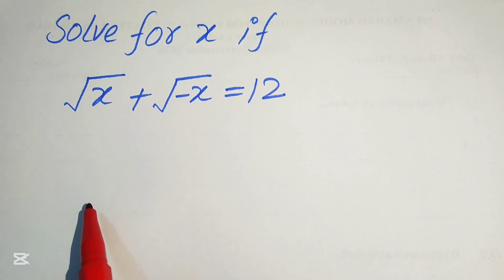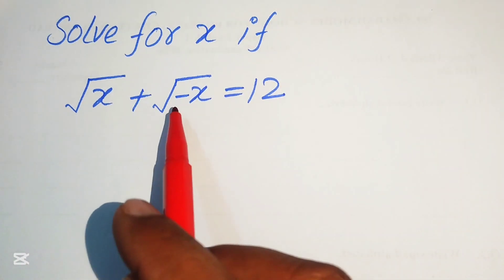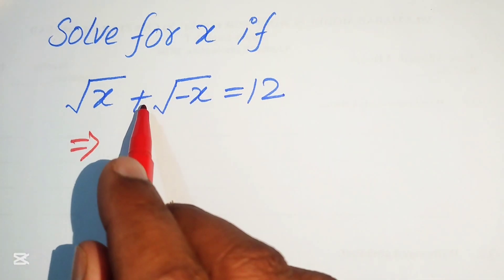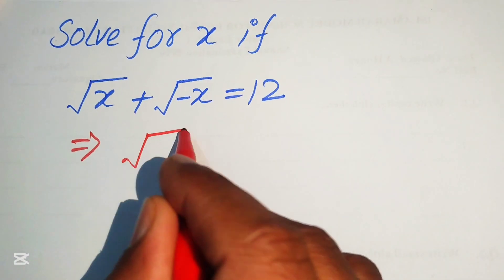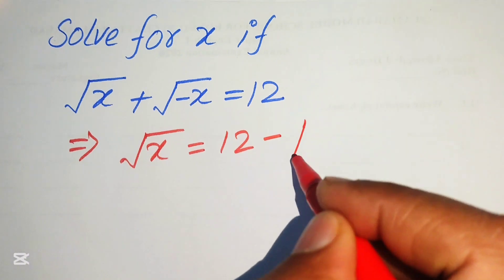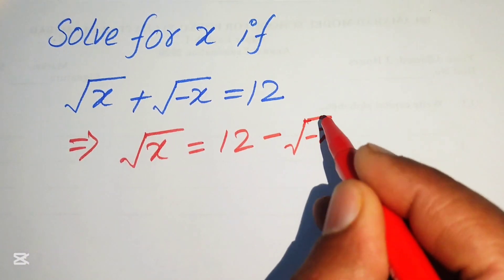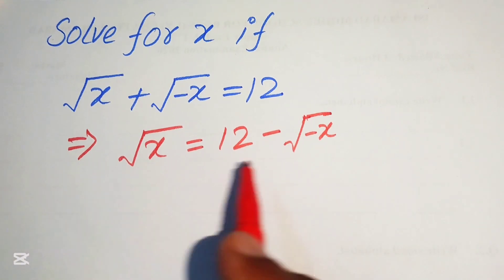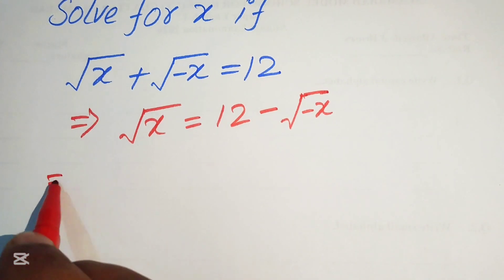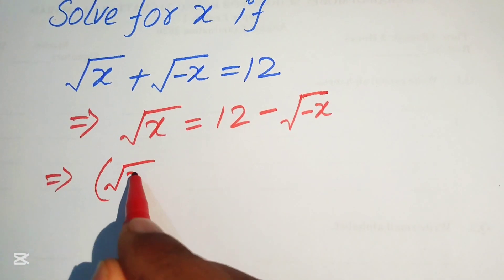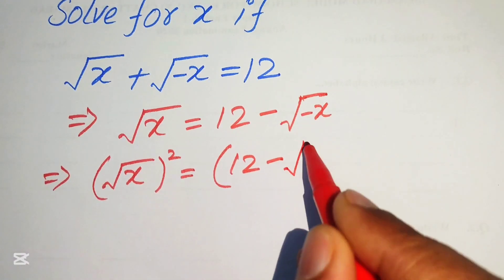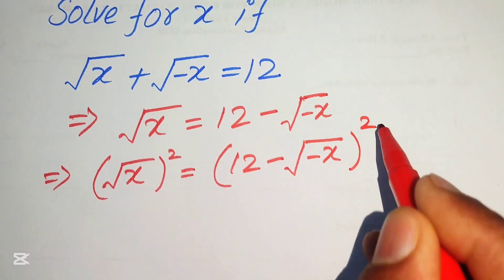The very first step is to move the minus square root of x term to the right hand side. When you move it to the right hand side it becomes negative, and we write it as square root of x equals 12 minus square root of minus x. After that, to remove the radical signs we take the square on both sides, which gives us x equals 12 minus square root of minus x, whole squared.